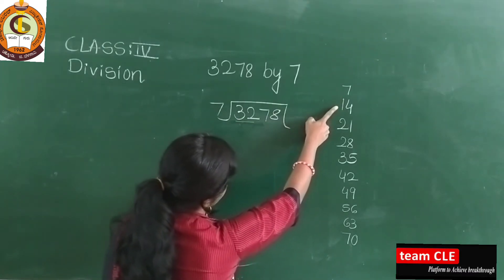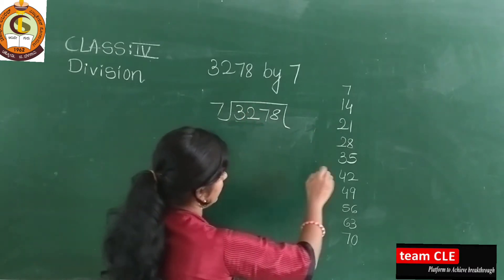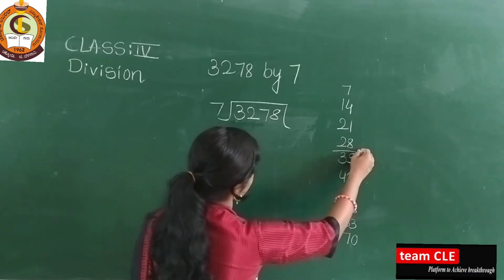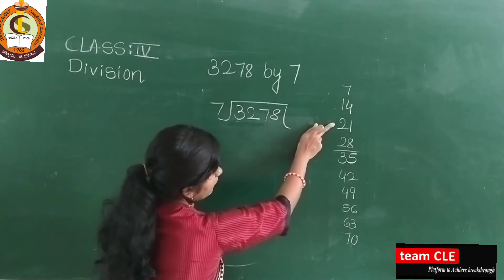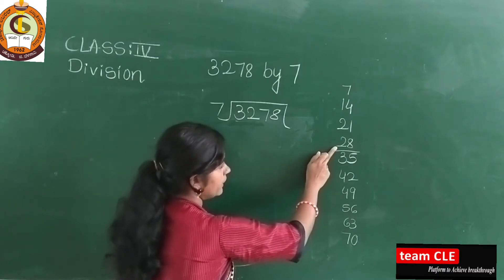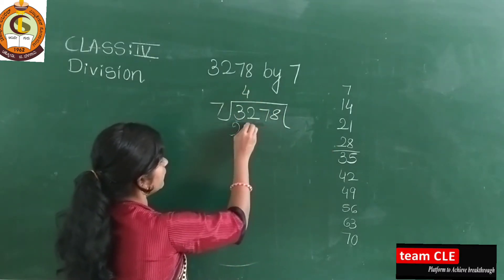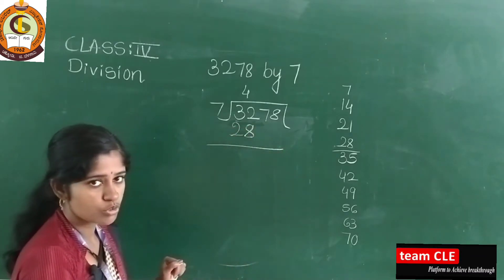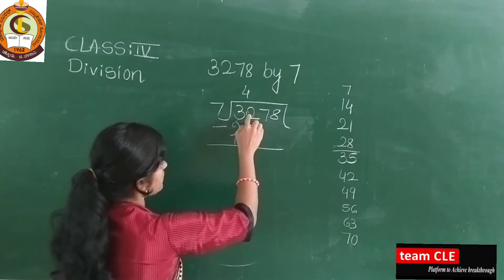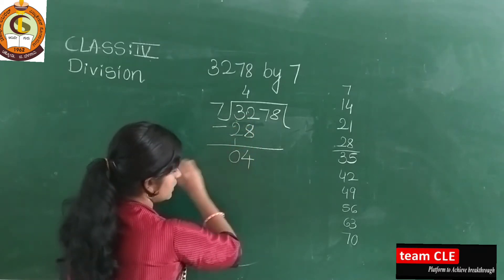Take 32 and look through the 7 times table: 7, 14, 21, 28 — then 35, 42, 49 are all bigger than 32. So the nearest small number is 28. That gives us 7×4=28. Now subtract: 32 minus 28. 2 minus 8 is not possible, so we borrow — 12 minus 8 is 4, and 3 minus 3 is 0.